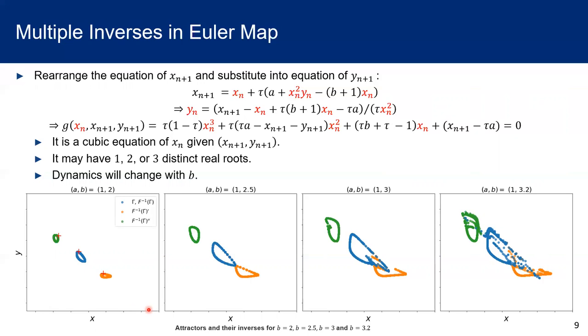When we increase the value of B, the size of the attractor will be increased. For the case of B equals to 2.5, the blue and the orange curve are intersecting at one point, showing this one should represent the roots with multiplicity 2. For a larger value of B, the blue one and the orange one intersect at a bigger region, indicating a more complicated backward time dynamics.